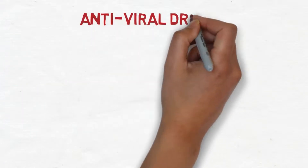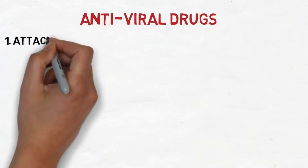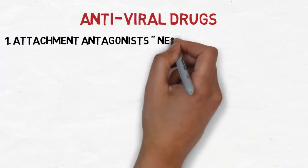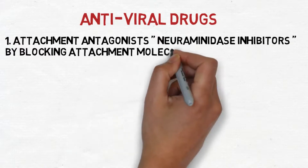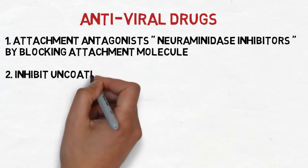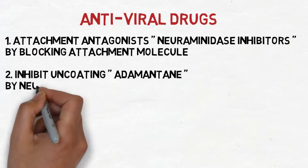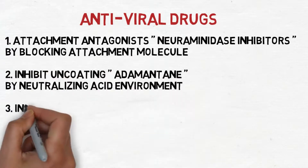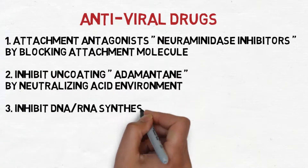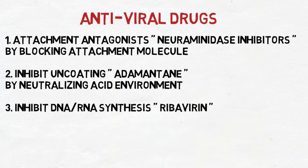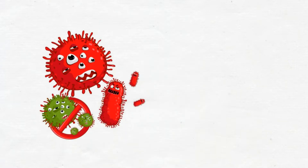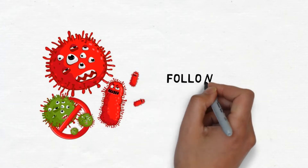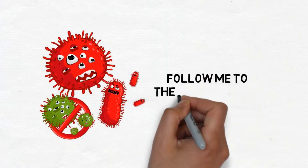And last but not least, the antiviral drugs. Antiviral drugs work through three mechanisms: attachment antagonists, by blocking attachment molecules as in neuraminidase inhibitors; inhibiting uncoating by neutralizing the acid environment as in amantadine; and inhibiting DNA or RNA synthesis as in ribavirin. I hope you all got a small idea about viruses, and I advise you not to miss the next videos about DNA and RNA viruses, containing great mnemonics to catch.